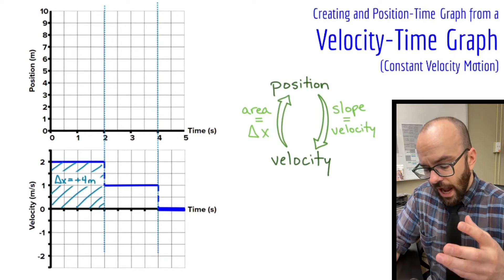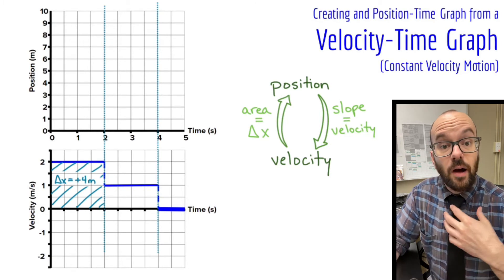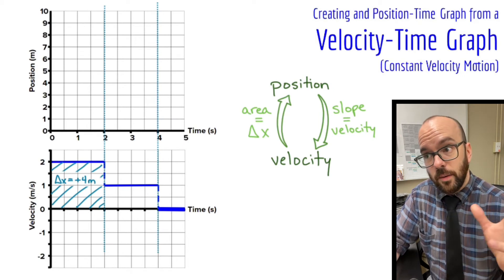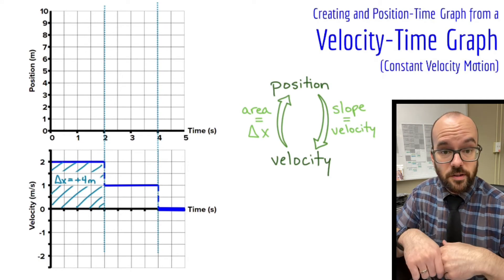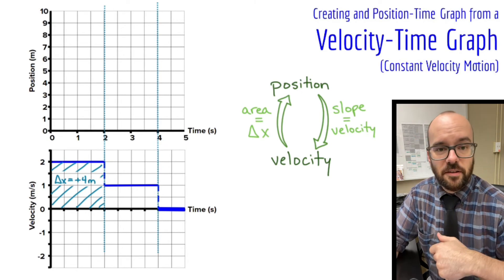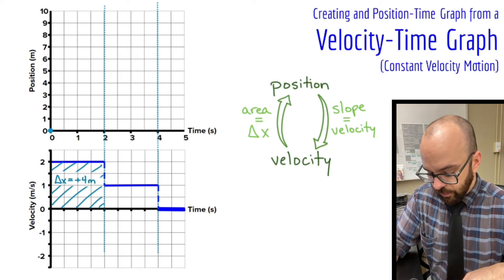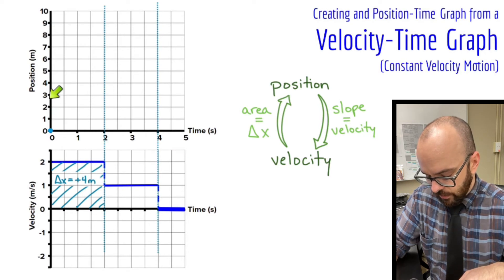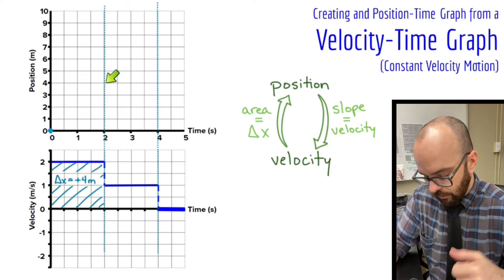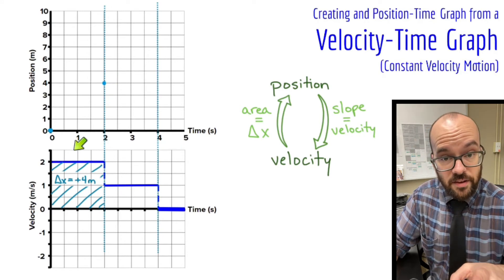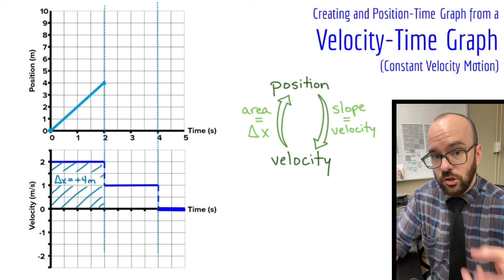Now I'm going to go up to my position graph. I'll pick a starting position of zero meters since no starting position is defined in this problem. I'll mark a point at (0, 0). My displacement was positive four meters, so I go from zero up to four, reaching a position of four at the end of the time interval. Because I'm moving at a constant velocity during that whole interval, I'll connect those two points with a straight line, not a curve.